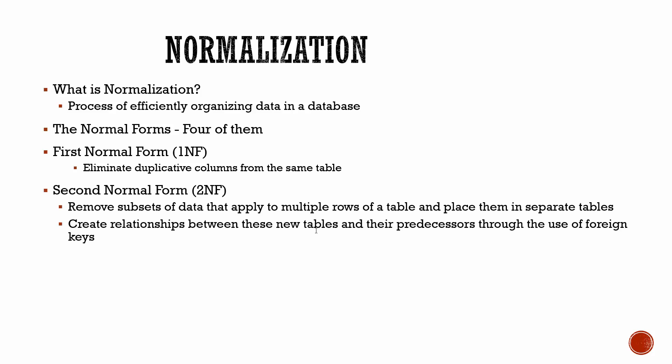The second normal form, the second level of normalization, removes subsets of data that apply to multiple rows. Currently our database has subsets of data that we could remove — we're not in the second normal form. When we do that, we create some relationships, and I'll show you in the next video how we're going to do that.